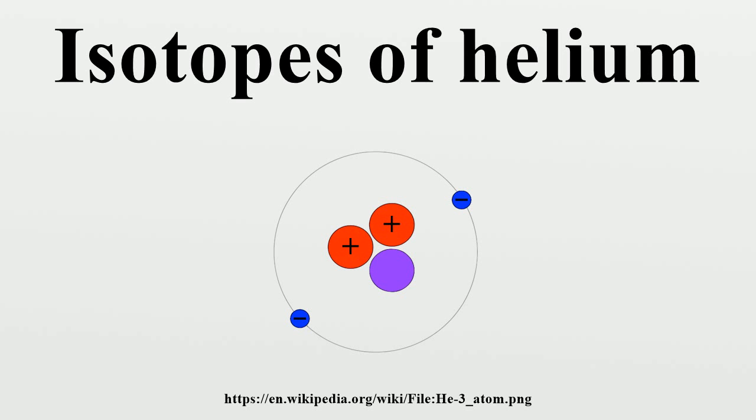Helium-7 and helium-8 are hyperfragments that are created in certain nuclear reactions. Helium-10, despite being a doubly magic isotope, has a very short half-life.